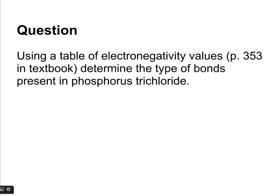Your question for this section? Using a table of electronegativity values like the one on page 353 in your textbook, determine the type of bonds present in phosphorus trichloride.